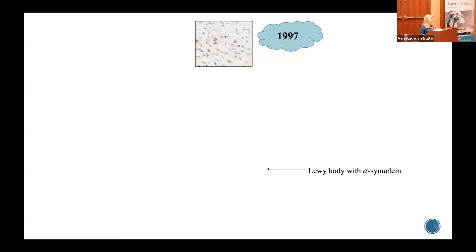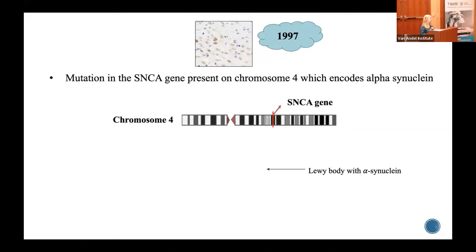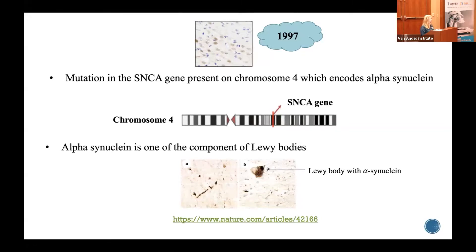As Dr. Simon mentioned, in 1997 two major discoveries happened. One: some of the minor forms of Parkinson's disease occur due to mutation in the gene SNCA, giving a hint that alpha-synuclein is a signature for the development of Parkinson's disease. Another discovery was about Lewy bodies — it was found that alpha-synuclein is one of their components. This gives us the idea that alpha-synuclein may be a promising marker for the diagnosis of Parkinson's disease.